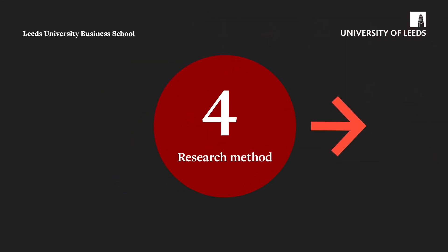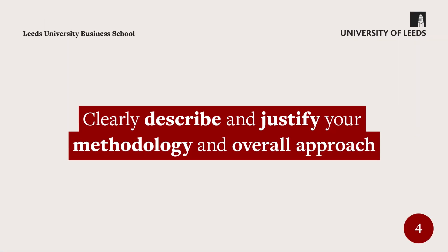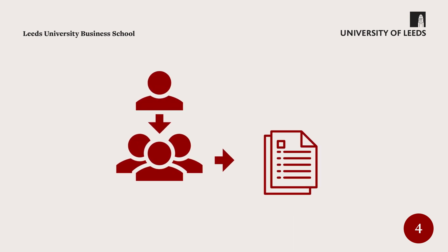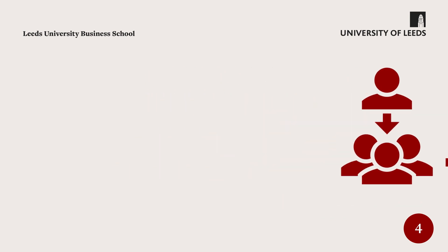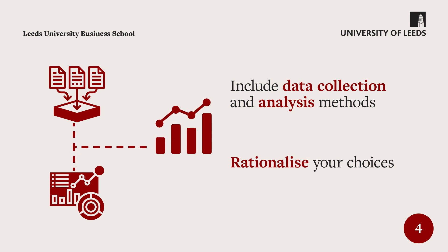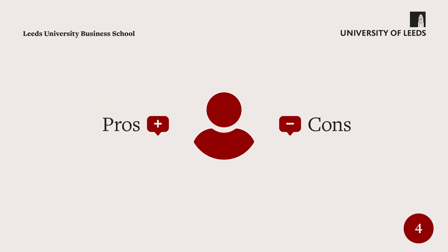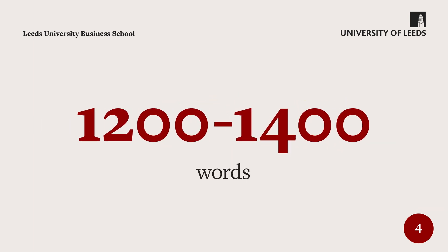Step 4: Outline your research method. Clearly describe and justify your methodology and overall approach to help you and potential supervisors determine the viability of your research. Include data collection and analysis methods. Rationalise your choices. Engage with the literature on the pros and cons of your research methodology, and keep it between 1,200 and 1,400 words.